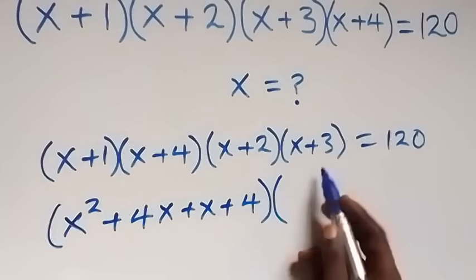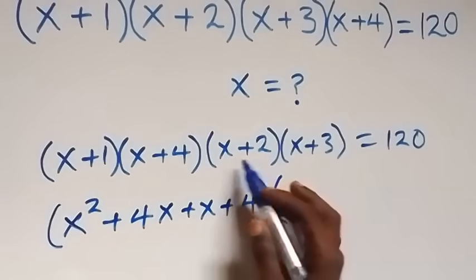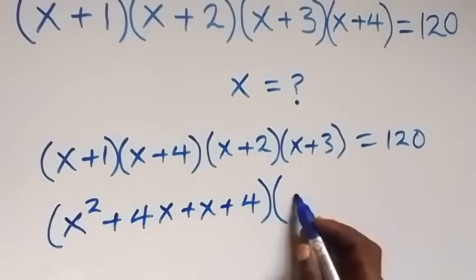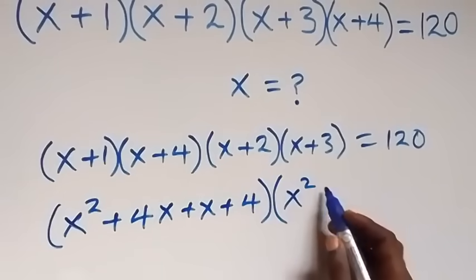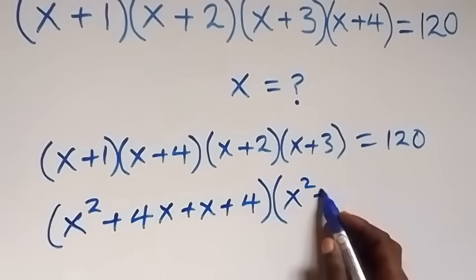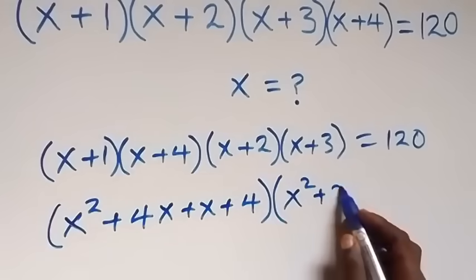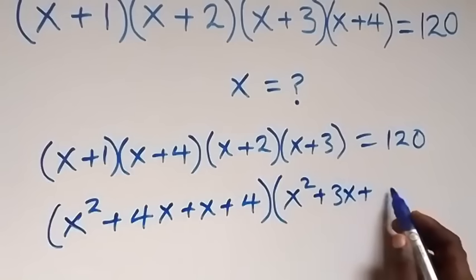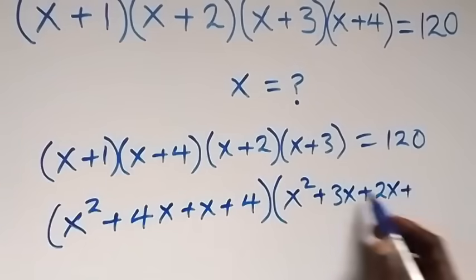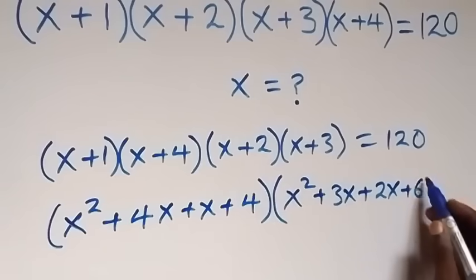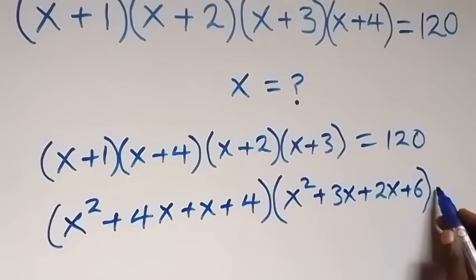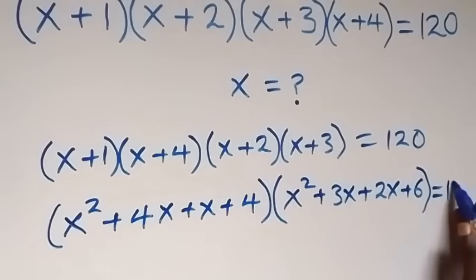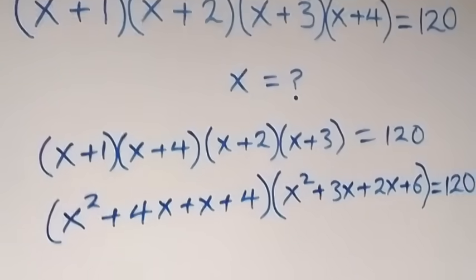Then let's expand these two brackets also. Here we have x times x, that's x squared, then plus x times 3 gives 3x, plus 2 times x gives 2x, then plus 2 times 3 gives 6. Close brackets. Now equals 120 on this side.